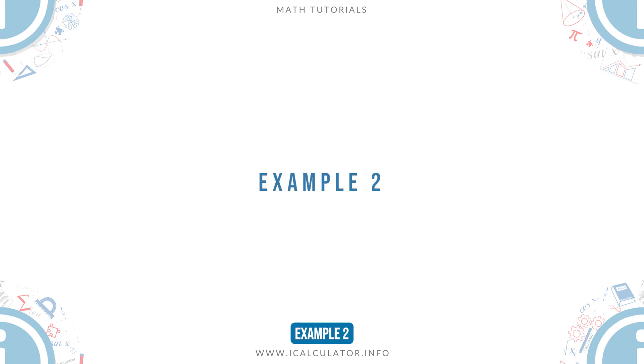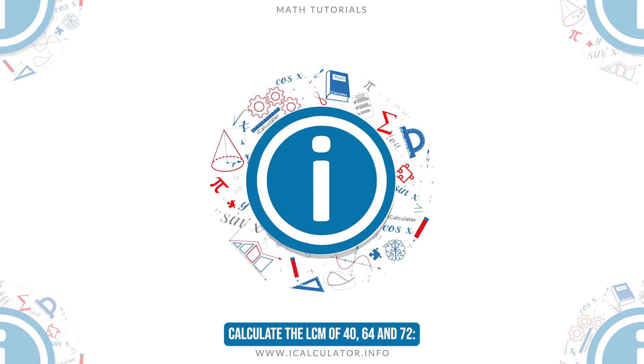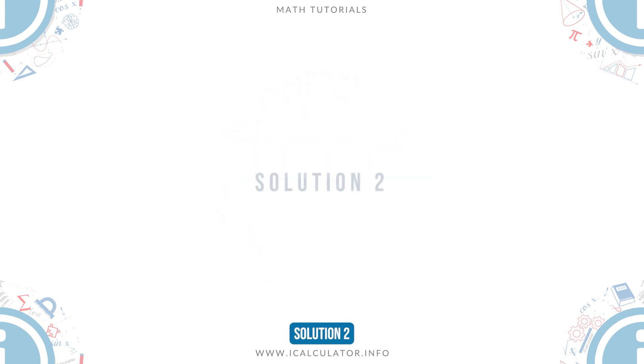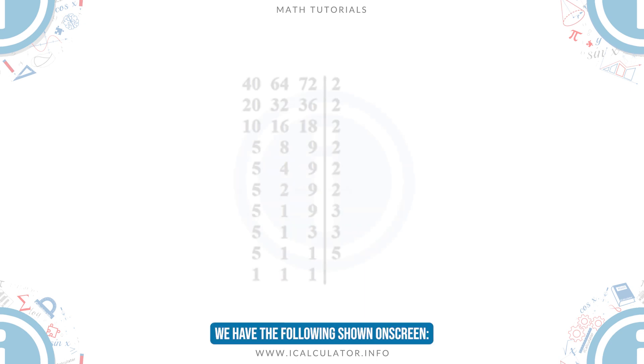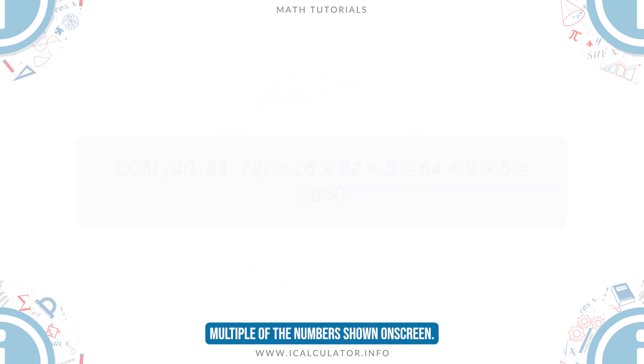Example 2. Calculate the LCM of 40, 64, and 72. Solution 2. We have the following shown on screen. Thus, we obtain for the least common multiple of the numbers shown on screen.